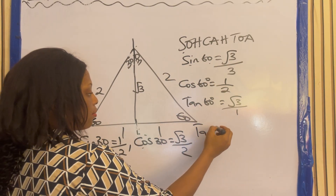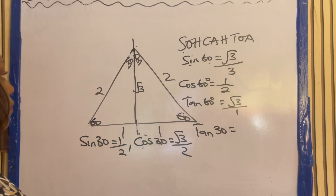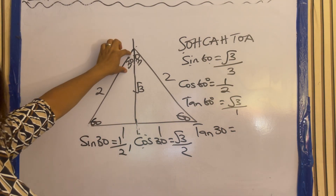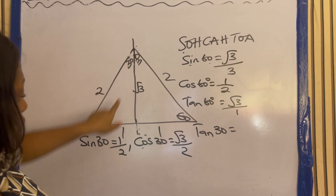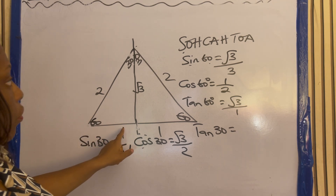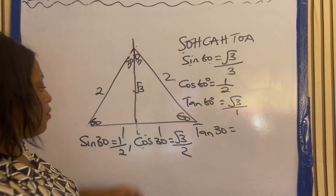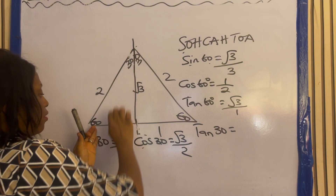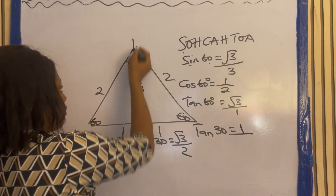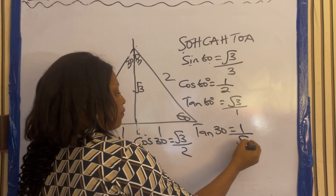Then tan 30 — tan is opposite over adjacent. Looking at 30°, this is the opposite and the adjacent here is root 3. So tan 30 is 1 over root 3.